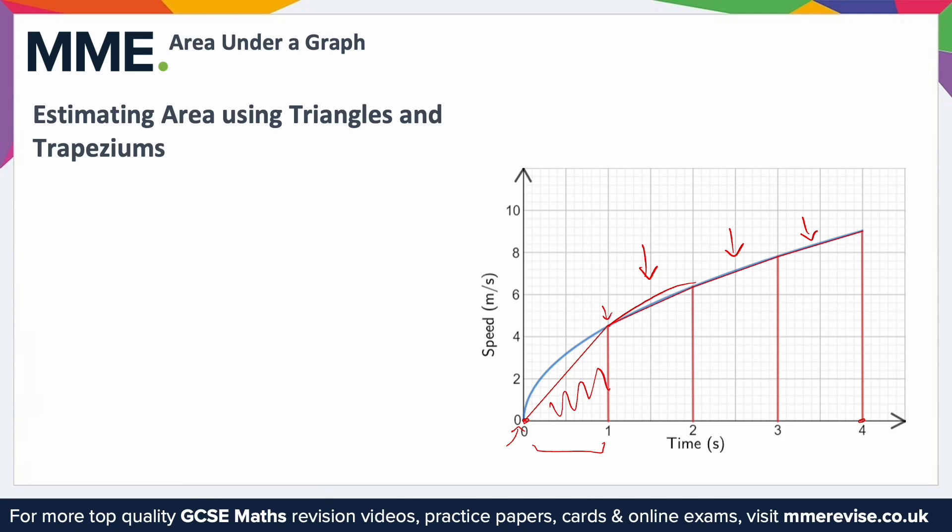Which by now you should be able to work out the area of. So we can label a few of these—let's say this is A, let's say this is B, C, and D. And working out the area of A, we've got a triangle whose width is one.